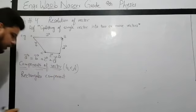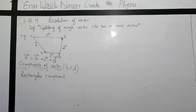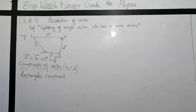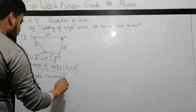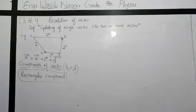Now I will tell you what is meant by rectangular component. Listen very carefully. The type of components of a vector which are perpendicular to each other are called rectangular components. The components of a vector which are perpendicular to each other are called rectangular components.